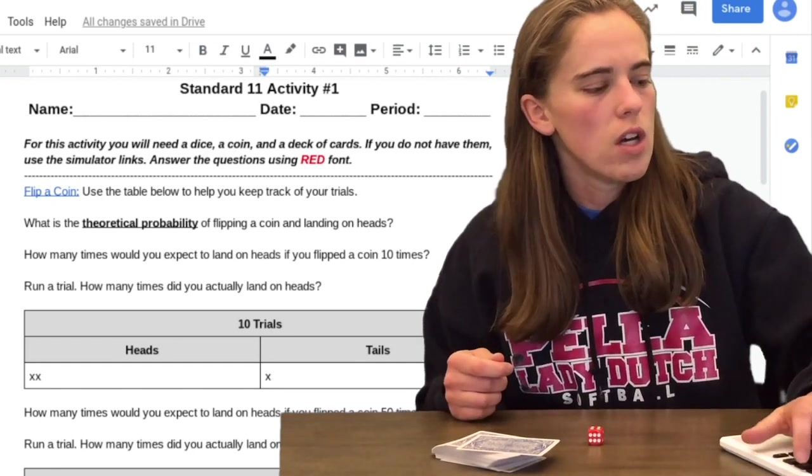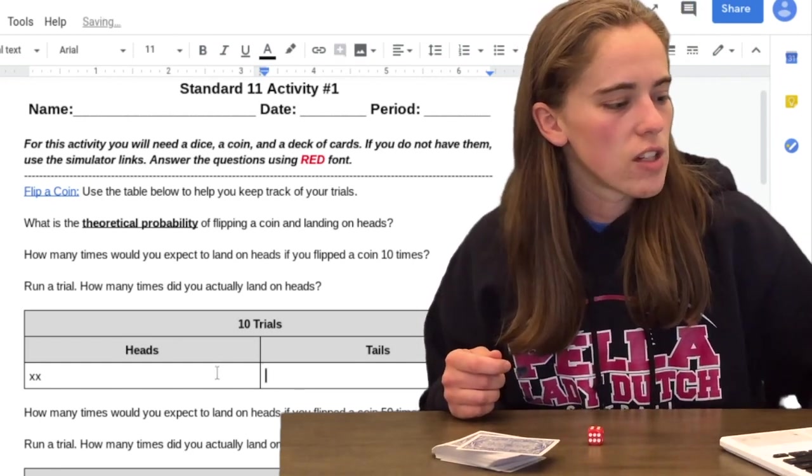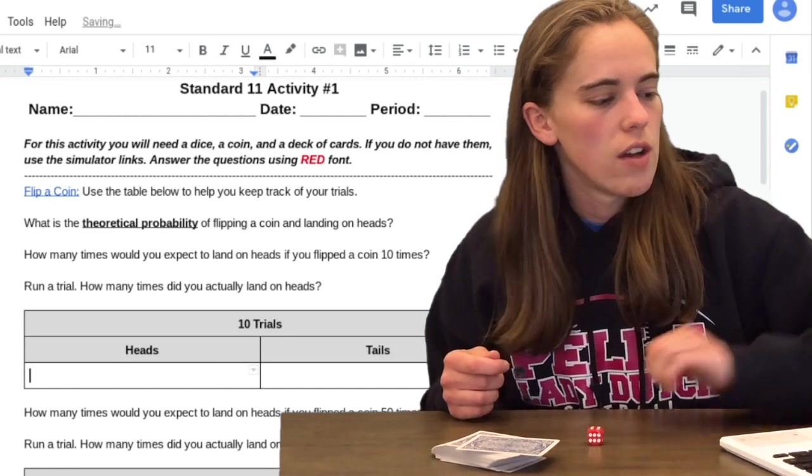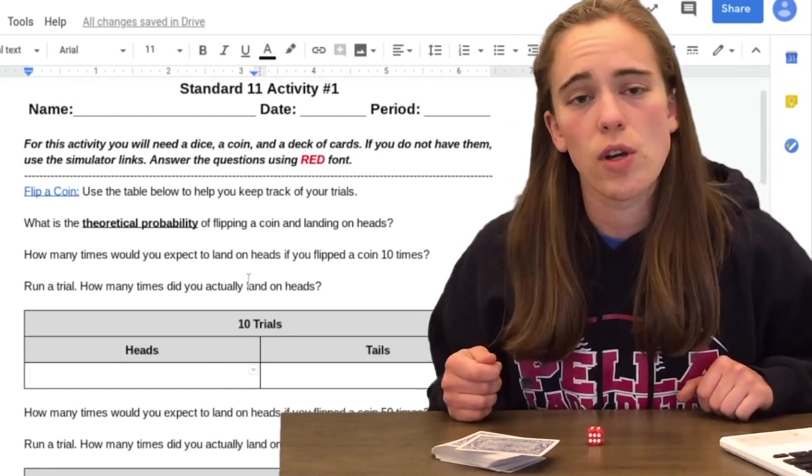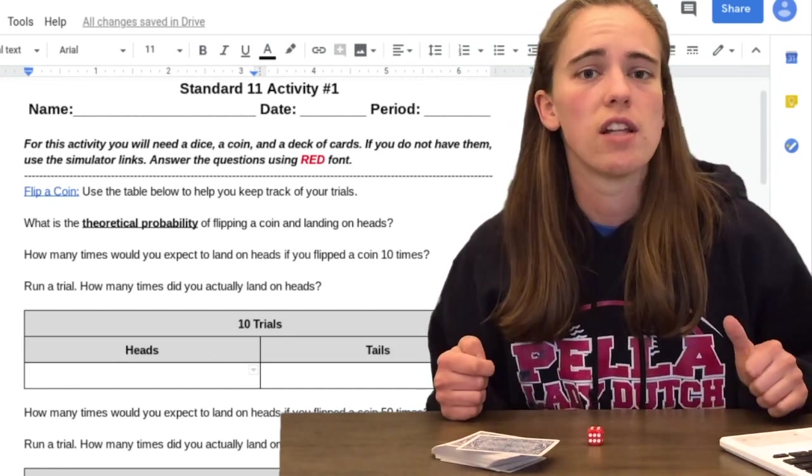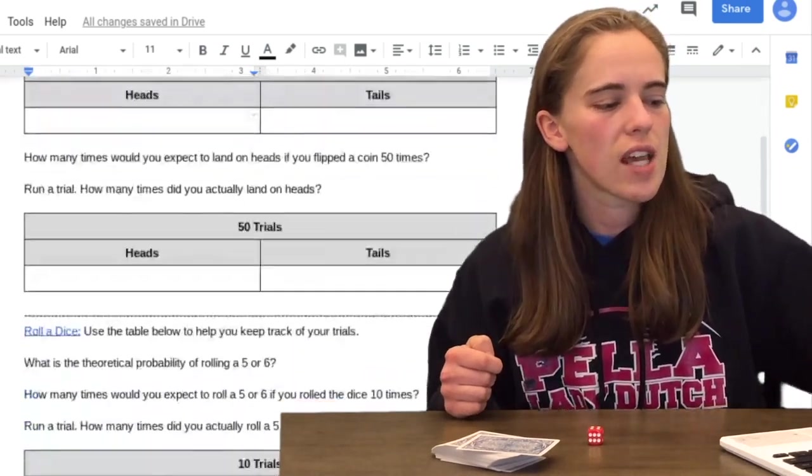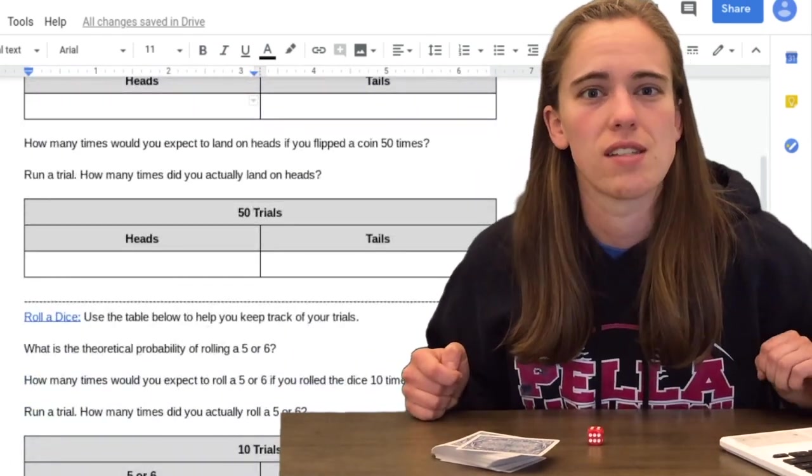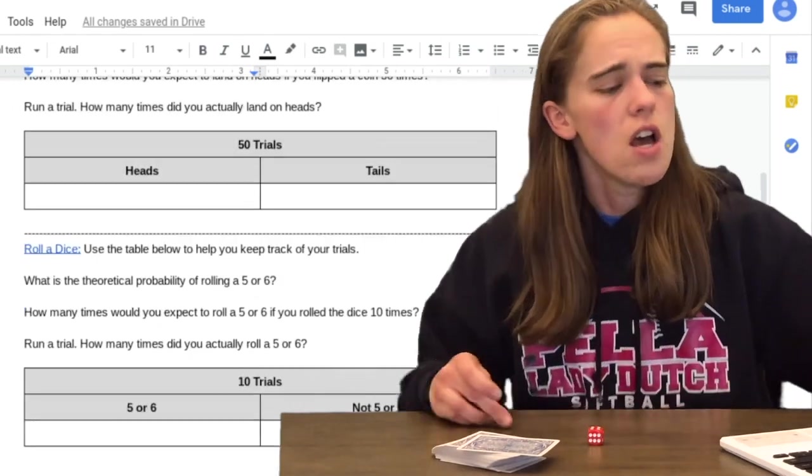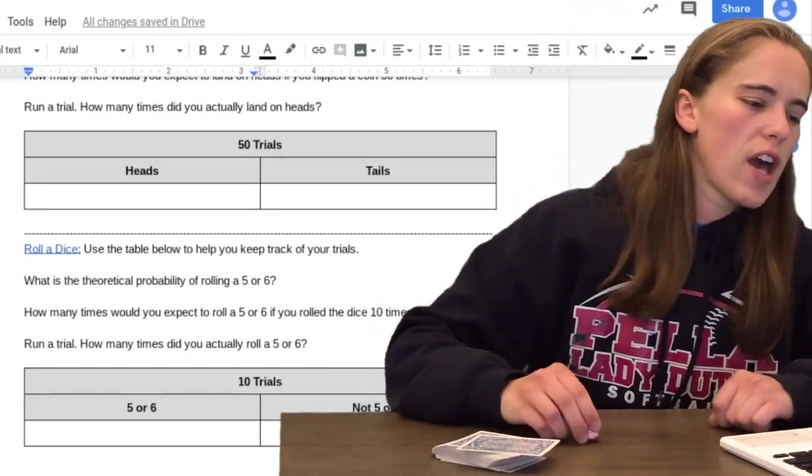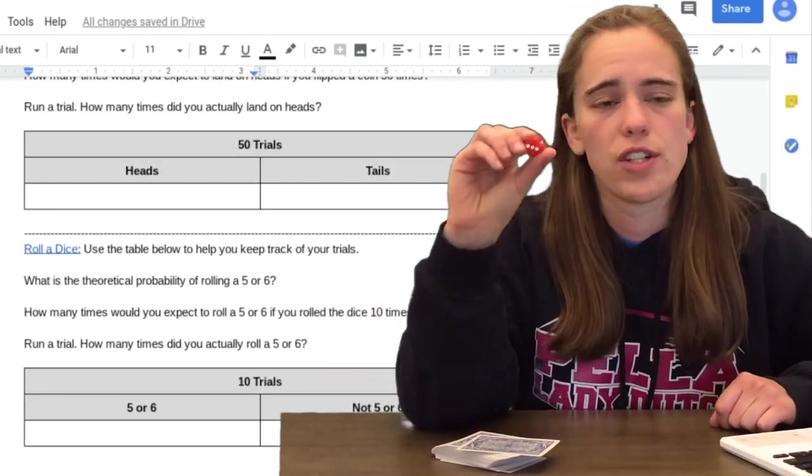Then you're going to actually answer that question for how many times you actually landed on heads. Then you're going to do the same thing, but the next time you're running 50 trials instead of 10. After you do that with the coin, you're going to go ahead and run the same idea with your dice.